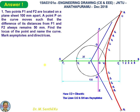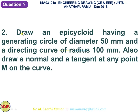If you have any doubt, pause the video and compare the answer with the given question. Now we move on to question number two: draw an ellipsoid having a generating circle of diameter 50 mm and a directing curve of radius 100 mm. Also draw a normal and a tangent at any point M on the curve.